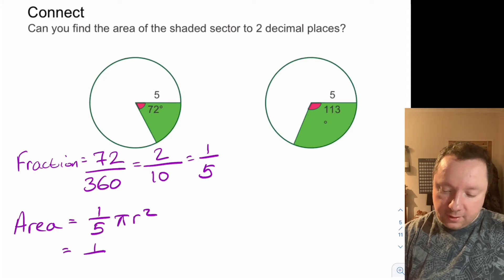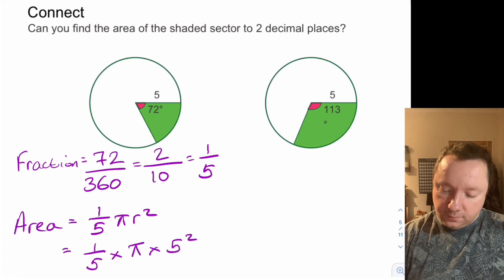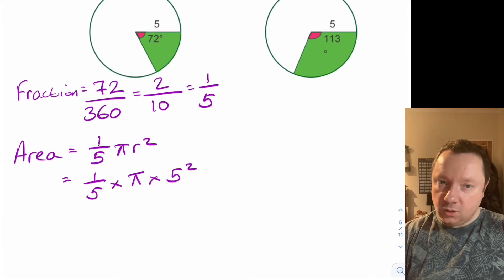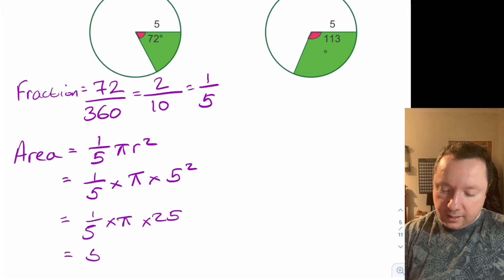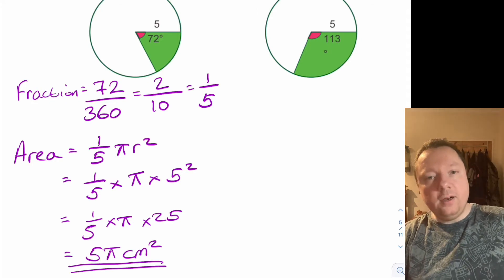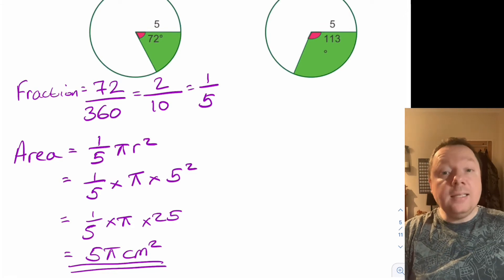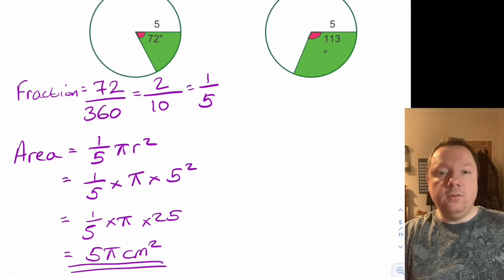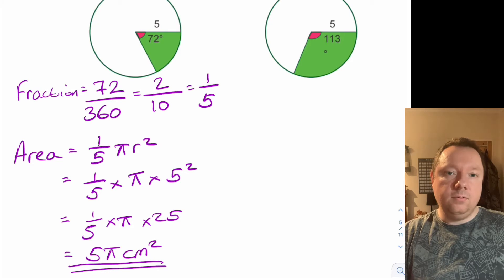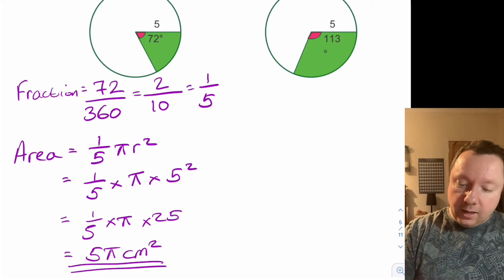So that's a fifth times pi times five squared. Don't do a fifth of five and then square it — square it first. So that is equal to a fifth times pi times 25, which is five pi centimetres squared. If it was a non-calculator question it's just five pi centimetres squared. Or if it's a calculator question, go ahead and do five times pi and you'll get an answer of about 15.7.